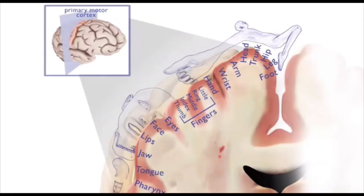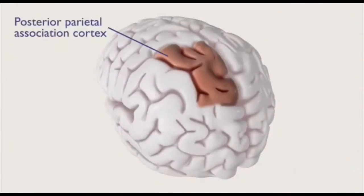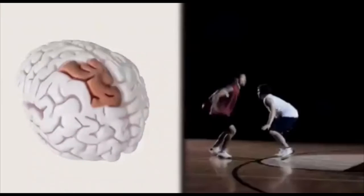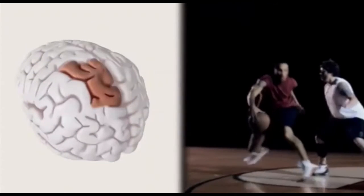Other parts of the cortex play supporting roles in movement control. The posterior parietal association cortex helps to identify the positions of various body parts and of objects around you. This is helpful in basketball, for example, when catching the ball.